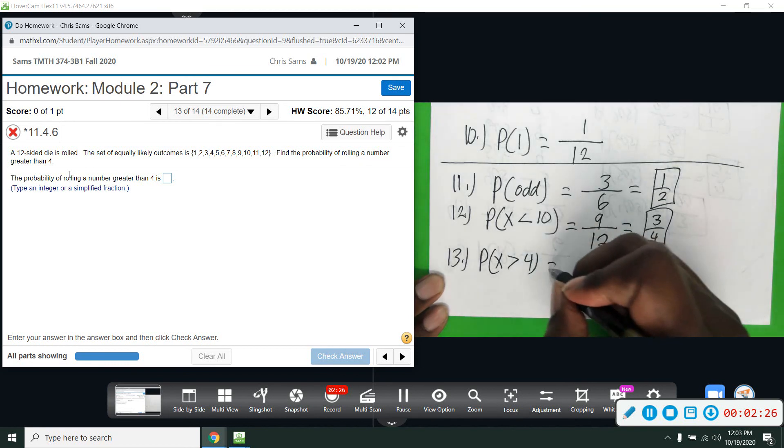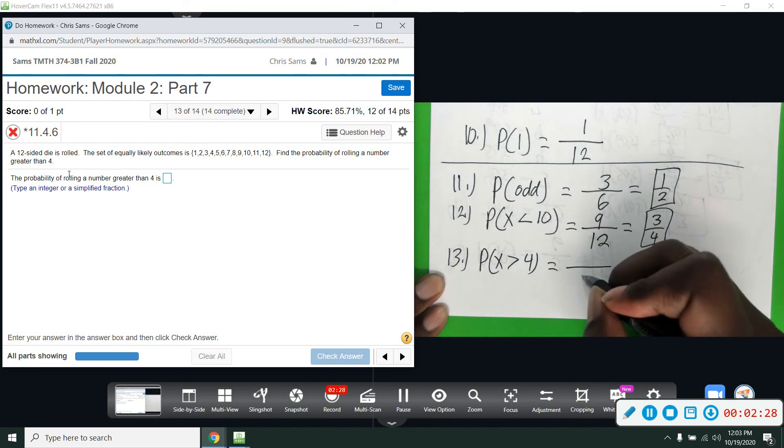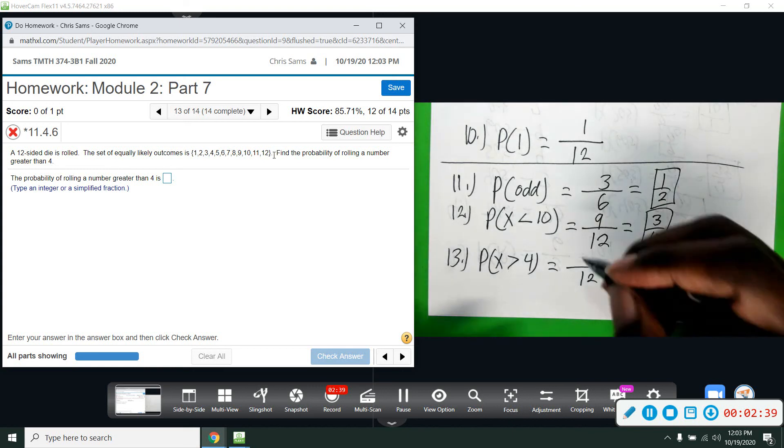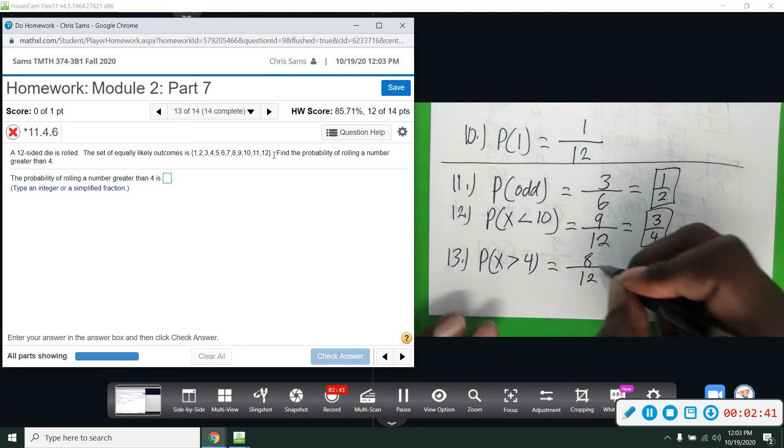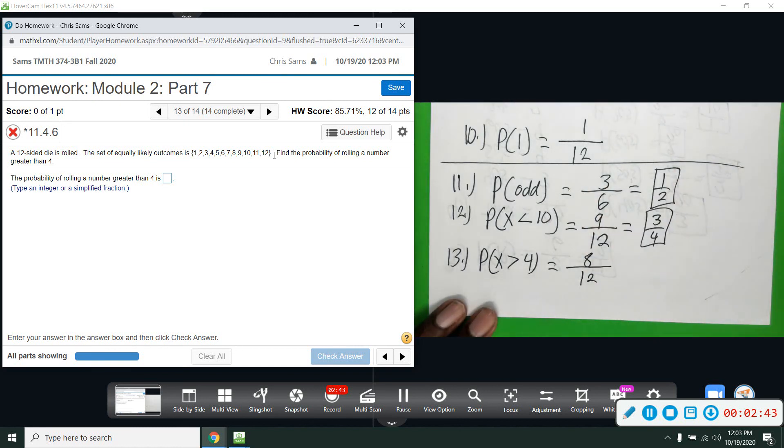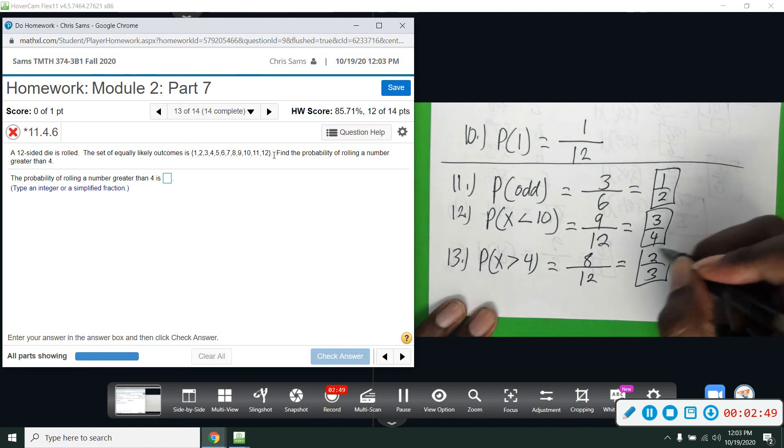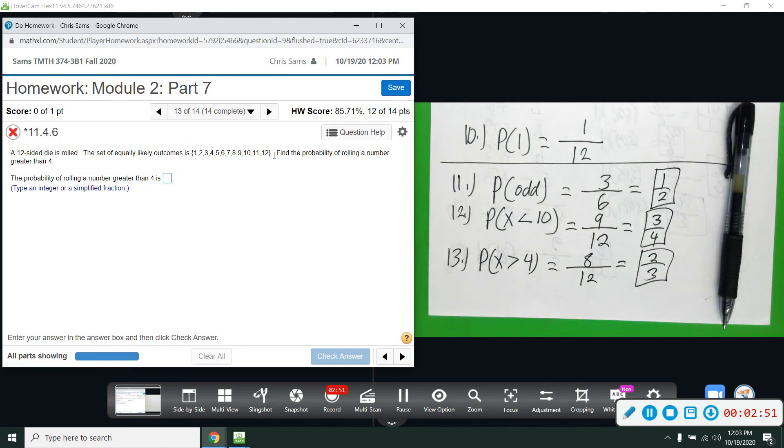So greater than 4, how many numbers are greater than 4? Out of 12 numbers, start with 5: 1, 2, 3, 4, 5, 6, 7, 8. There's 8 numbers that are greater than 4, so starting with 5, you count up to 12. And you can divide by 4, and that will give you 2 out of 3. So there's a two-thirds chance of rolling a 12-sided die and getting something greater than 4.